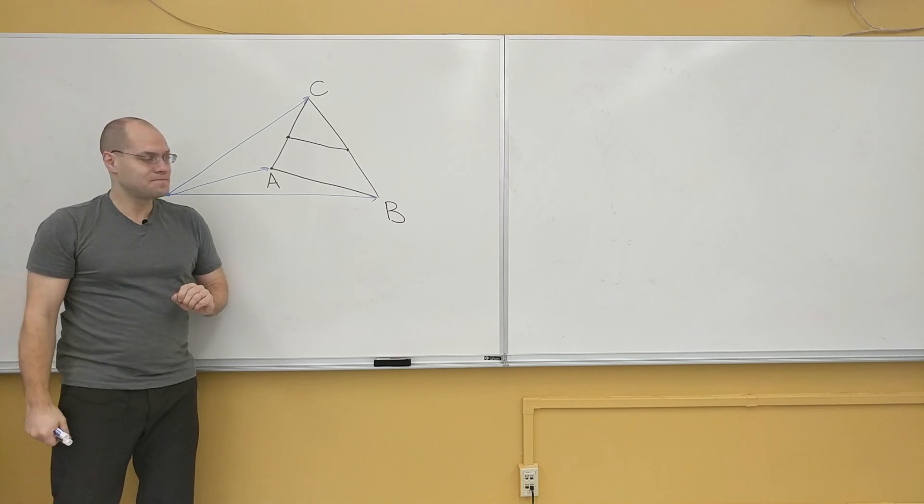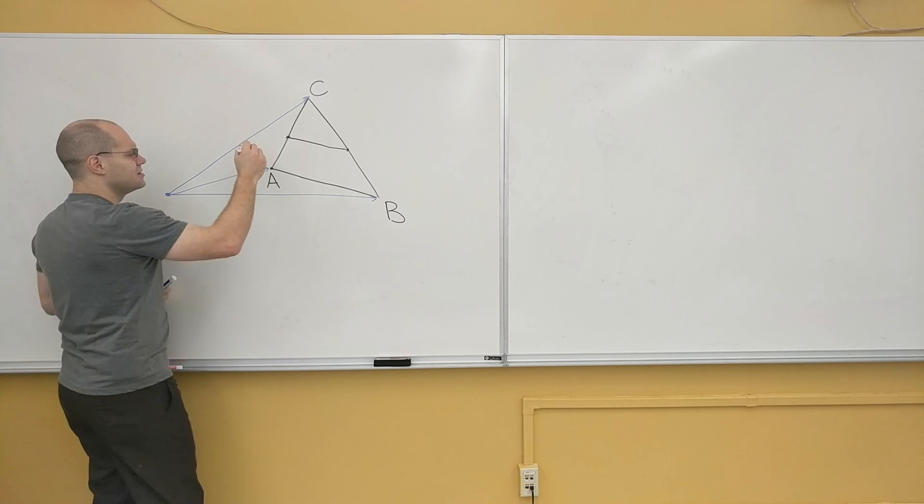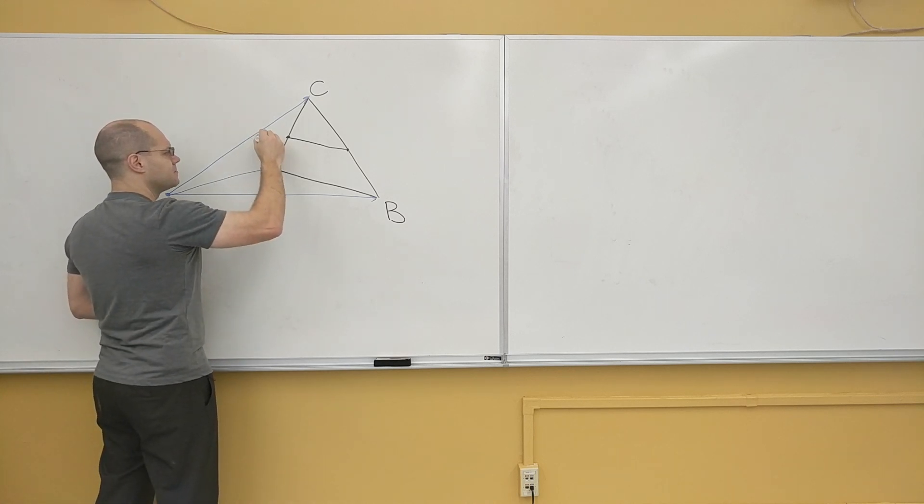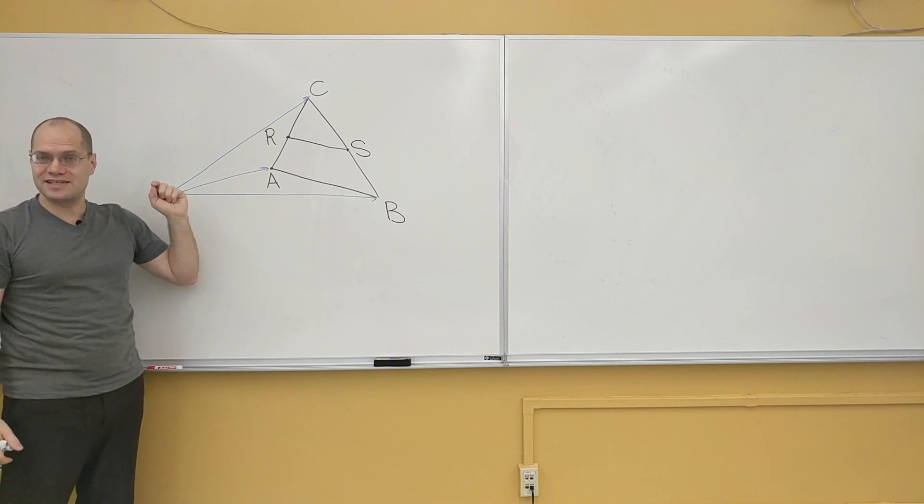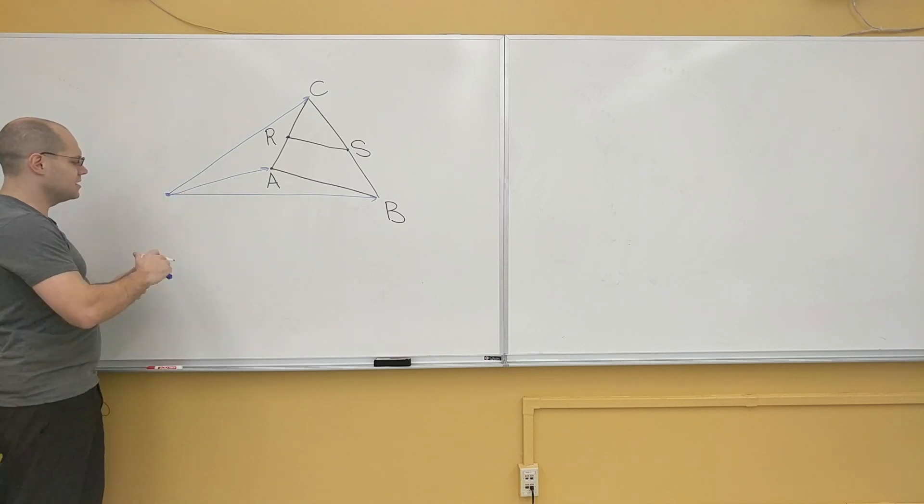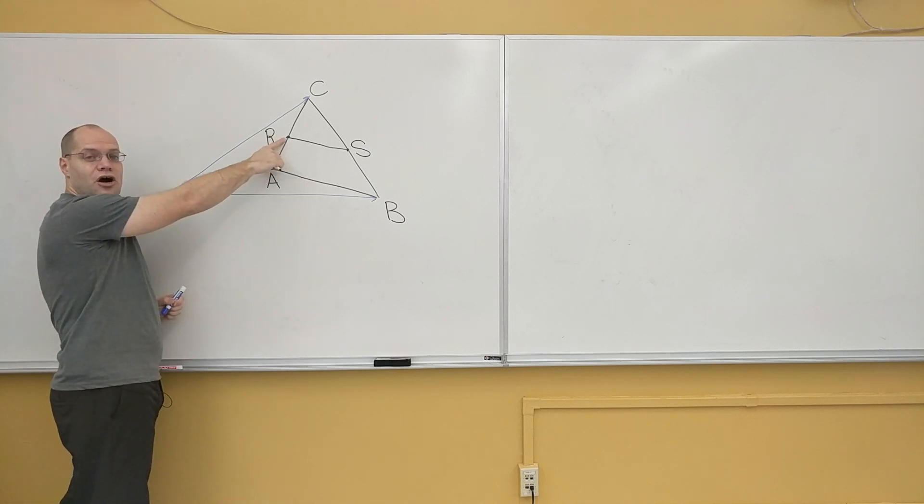Now let's express this point right here. It deserves some names, R and S. Once again, R the point, but I will use R the vector. When I say R vector, it means I'm talking about the vector that points from the origin to this point. That's what R vector is.